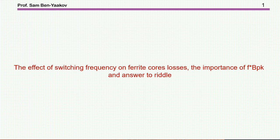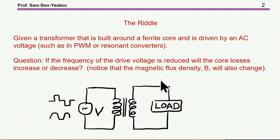Hi, I'm Sam Ben-Yaakov. This presentation is entitled The Effect of Switching Frequency on Ferrite Core's Losses, The Importance of F times B Peak and Answer to Riddle. In a previous video, I posted a riddle that reads like that. Given a transformer, here it is, that is built around the ferrite core and is driven by an AC voltage, here it is, such as the PWM or resonant converters.